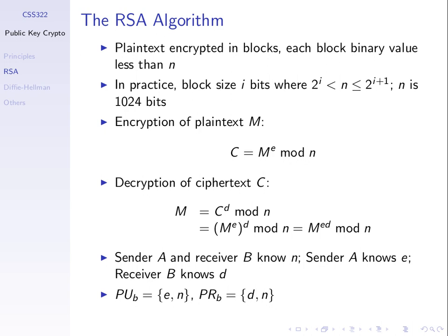The block value must be less than N, which is our modulus. In practice, if N is a 1,024-bit number, then the block size is I bits where I is chosen such that 2 to the power of I is less than N.